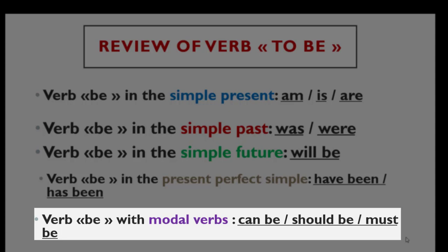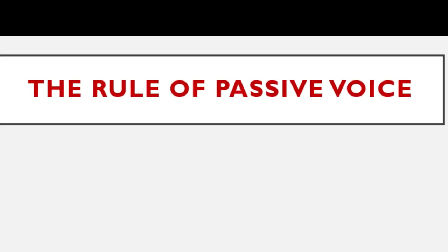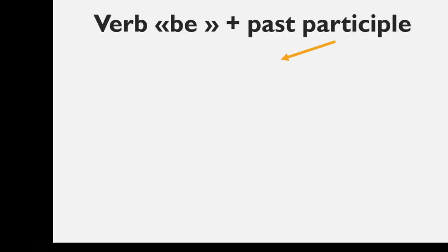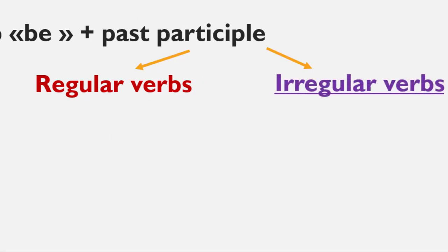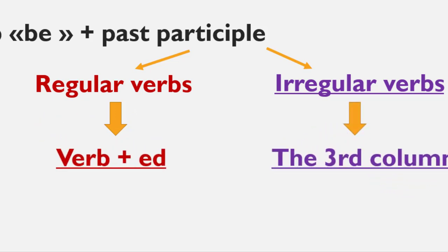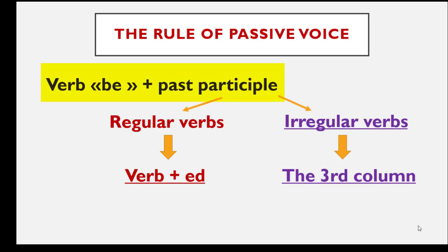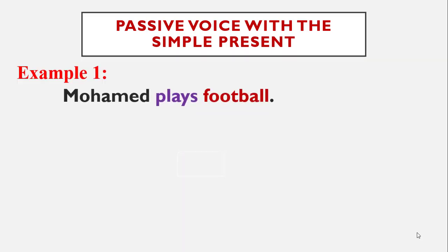I'm going to focus first on the simple tenses: simple present, simple past, simple future, and present perfect simple. Now let's go to the rule of the passive voice. The rule is: verb to be plus past participle. Just to remind you of the past participle — we have two types of verbs: regular verbs and irregular verbs. Regular verbs take verb plus -ed, and irregular verbs are exceptions found in the third column of the irregular verbs table.